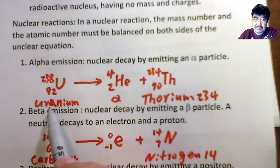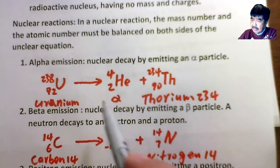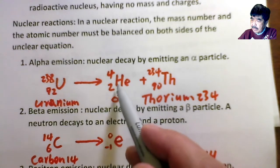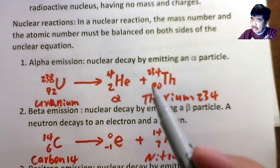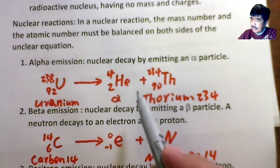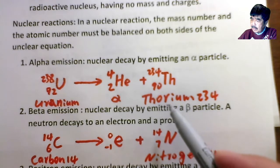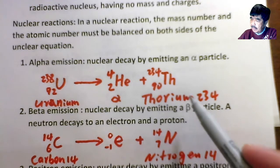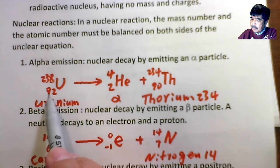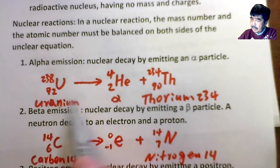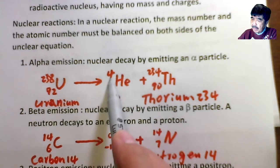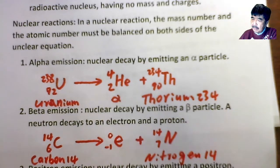This is an example: uranium-238. When it releases alpha particles — which we introduced as helium with atomic number 2 and mass number 4 — it decays into thorium-234. You can see that the proton number on both sides is balanced: 92 equals 2 plus 90. And the mass is also balanced: 238 equals 234 plus 4.